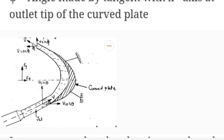We resolve this velocity into two components: V cos theta in the direction of the jet (x-direction) and V sin theta perpendicular to the direction of the jet. After striking, the jet moves along the plate and leaves with velocity V making angle phi with the horizontal. This exit velocity is resolved into V sin phi acting perpendicular to the jet direction (upward) and V cos phi acting opposite to the jet direction.